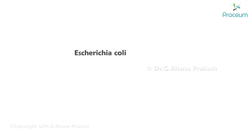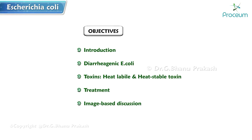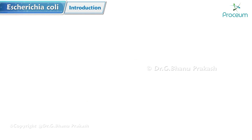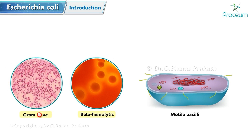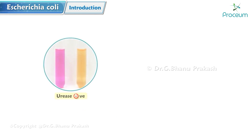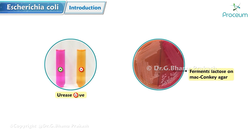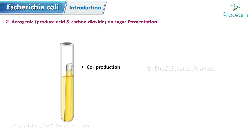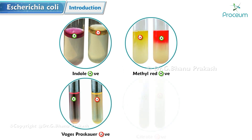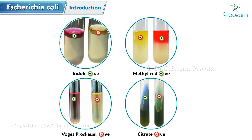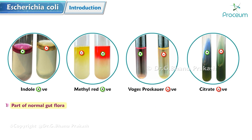Escherichia coli is a gram-negative, beta-hemolytic, motile bacilli. Except for its atypical types, it is mostly capsulated in 80% of cases. It is urease negative and ferments lactose on MacConkey agar. Escherichia coli is aerogenic on sugar fermentation. It is indole and methyl red positive, but VP (Voges-Proskauer) and citrate test negative. E. coli is part of normal gut flora; a large concentration is found in human feces, and therefore the fecal-oral route is the largest source of infection.